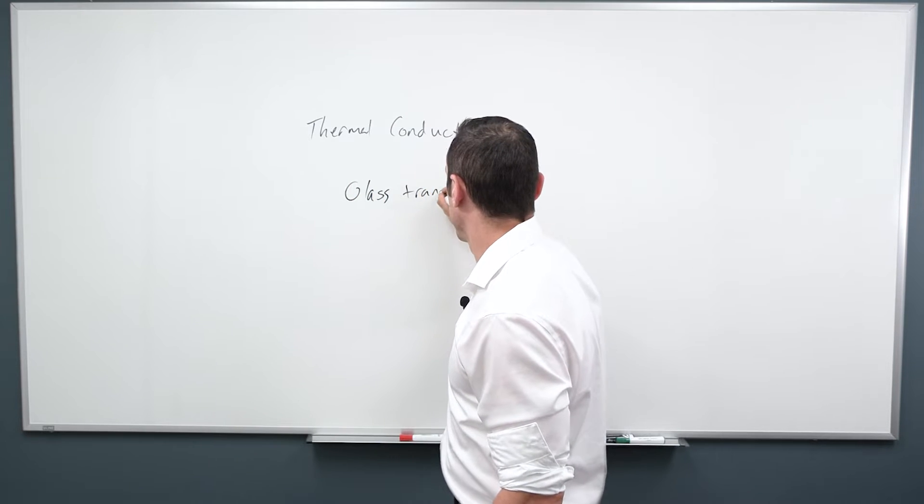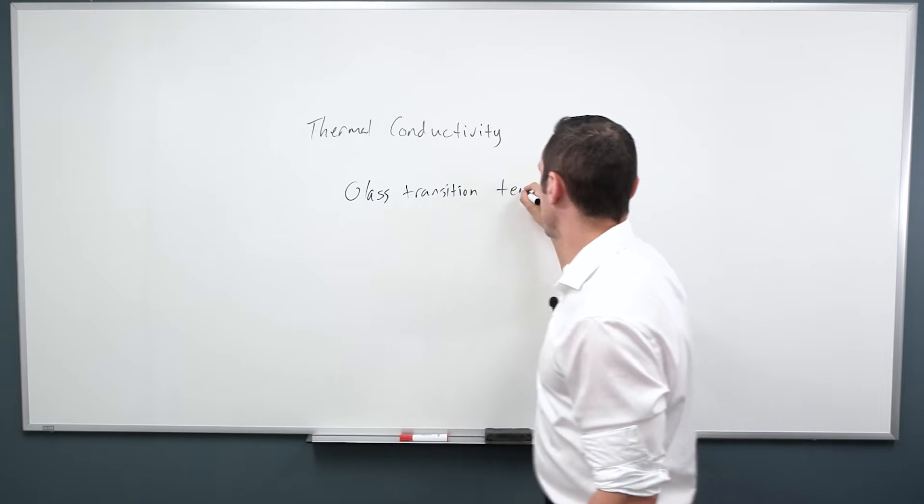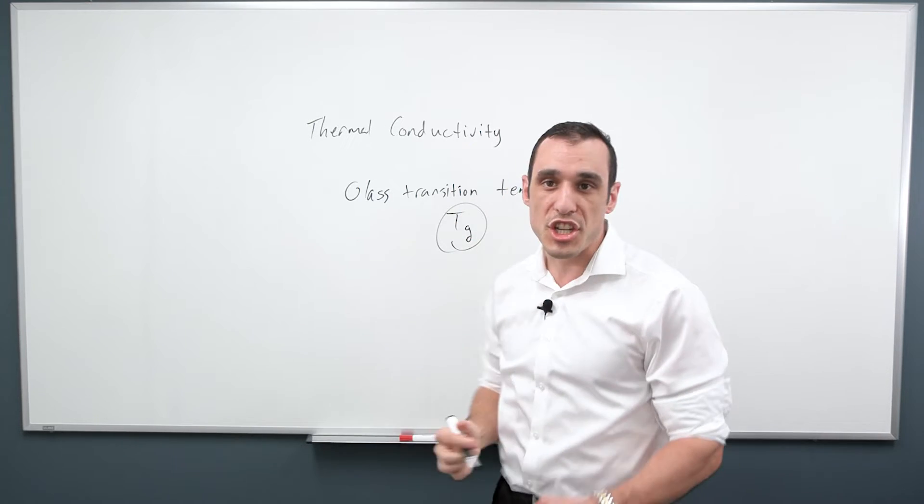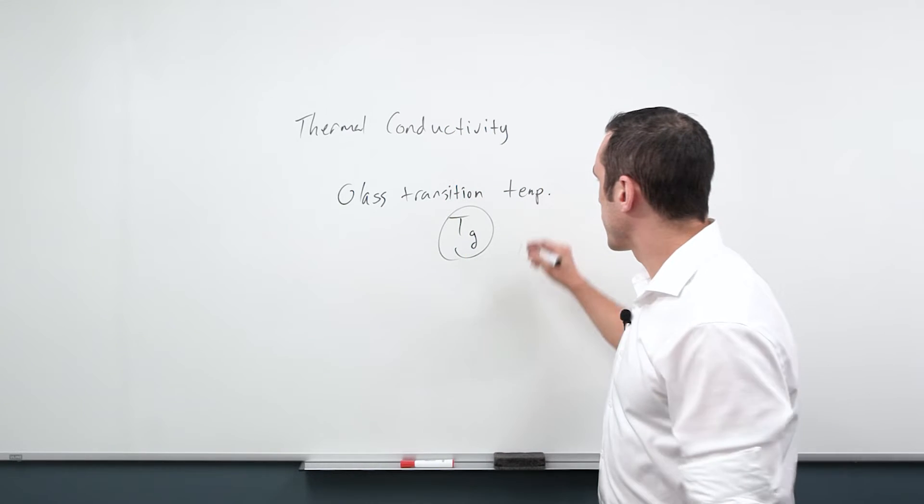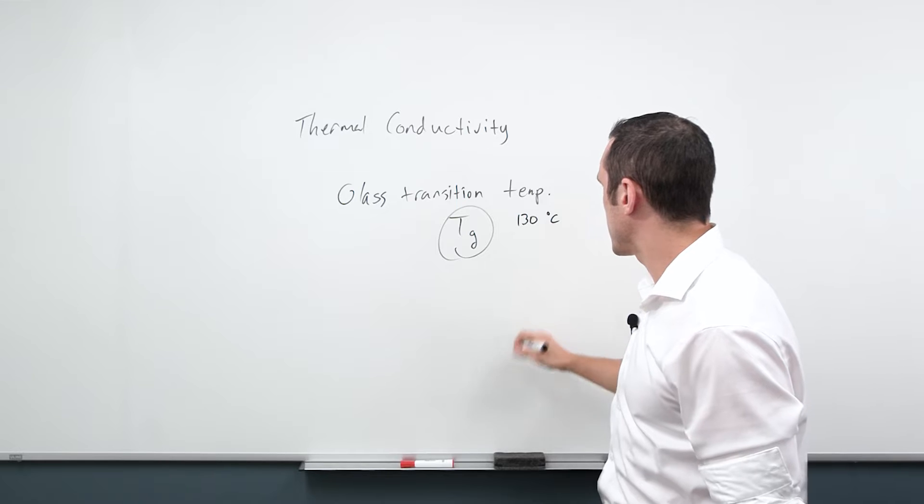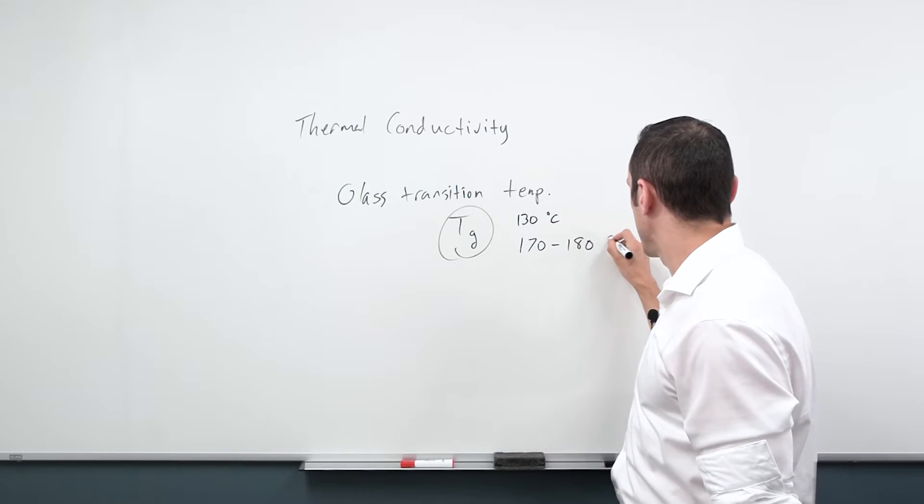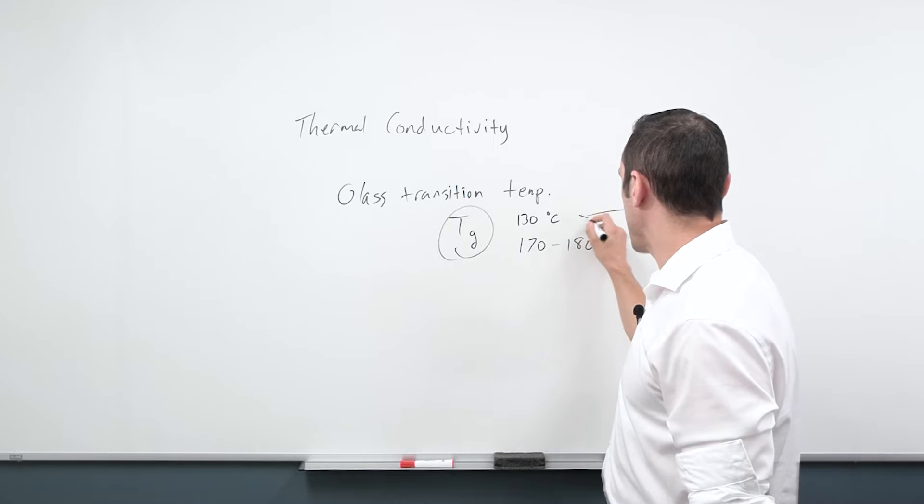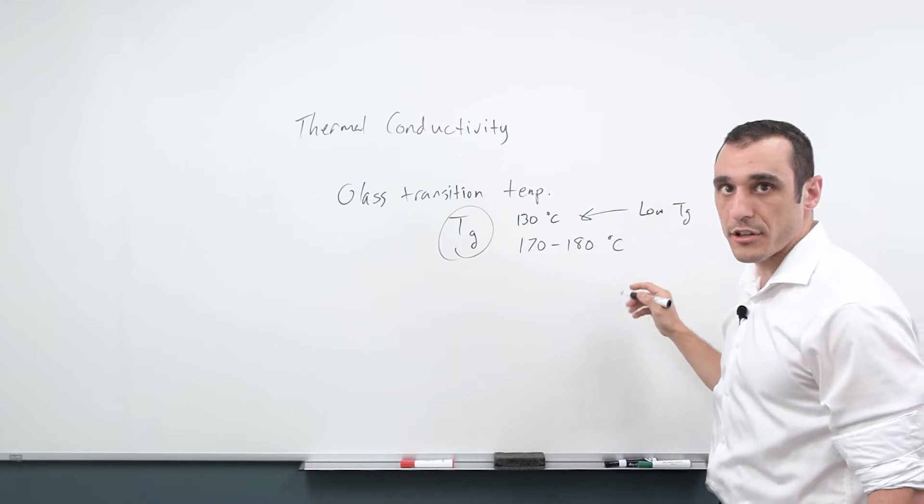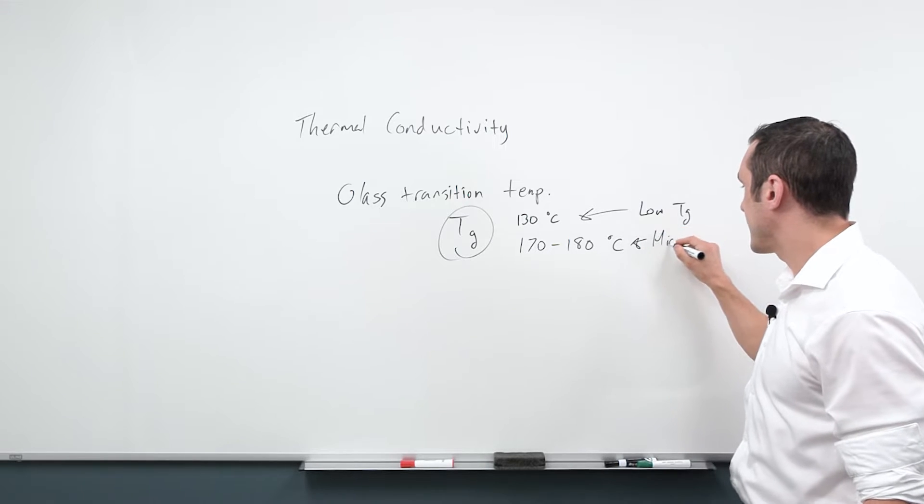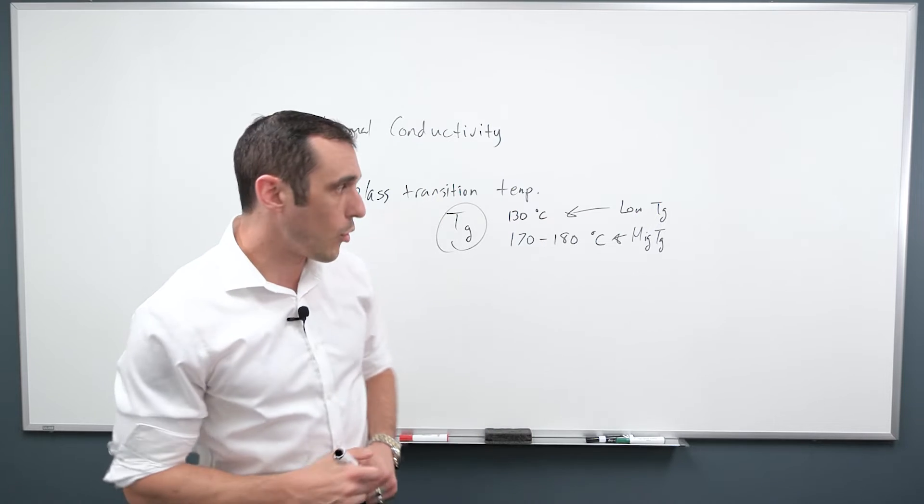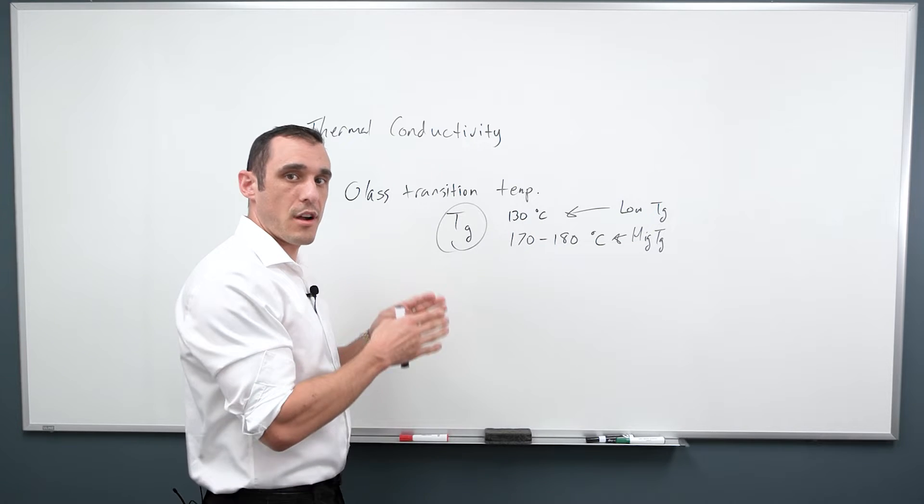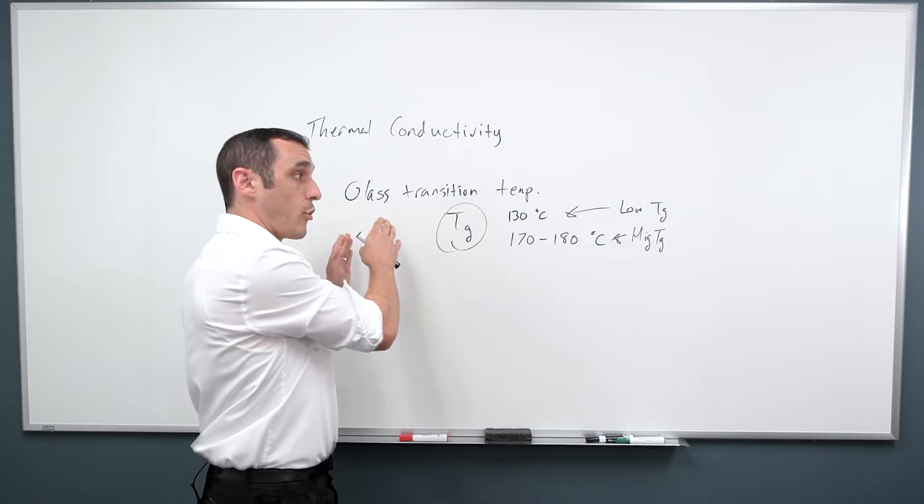Another important thermal property is the glass transition temperature. I'll just write glass transition temp. And usually if you look in the data sheet, this is denoted with the symbol TG. So TG values vary anywhere from about 130 Celsius up to maybe 170, 180 Celsius, depending on the manufacturer. Some laminate materials, they will call this out or market it as a low TG material or a high TG material.